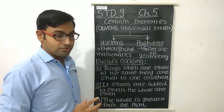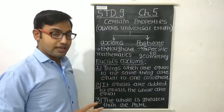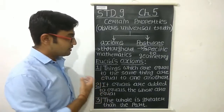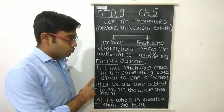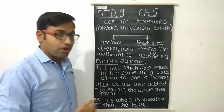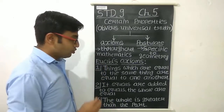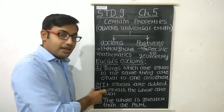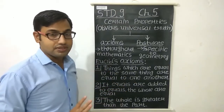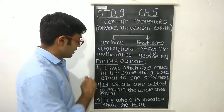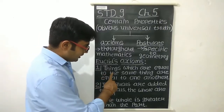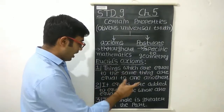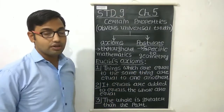Euclid has given more axioms, but some axioms we have to study in this class — and note that these axioms are not in a fixed order, so you do not have to remember which is first or second. The first axiom is: things which are equal to the same thing are equal to one another.